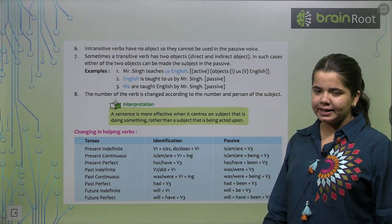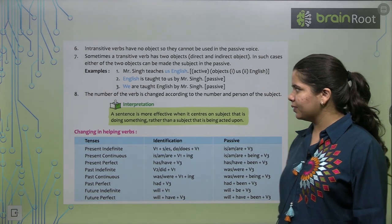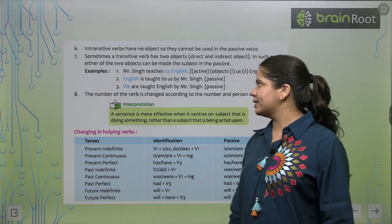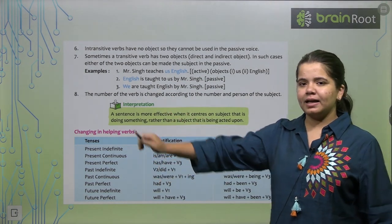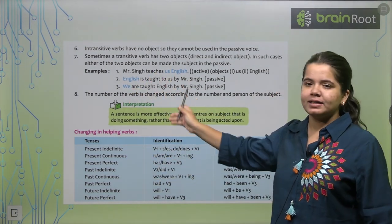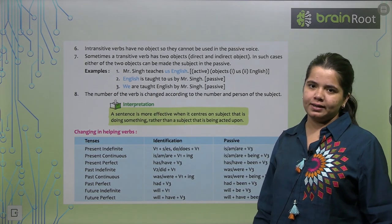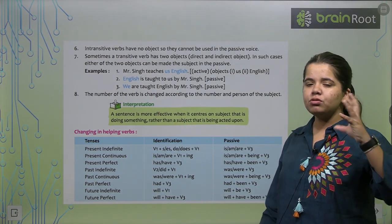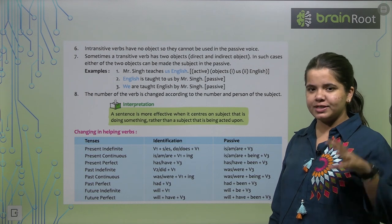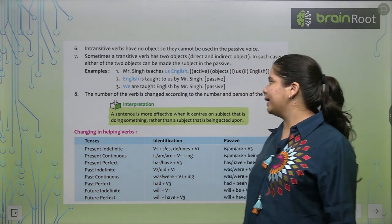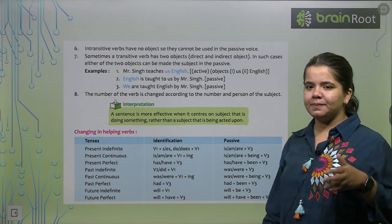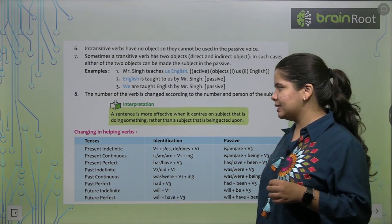Now we'll see examples. Mr. Singh teaches us English. This is an active sentence. This sentence is in active form. English is taught to us by Mr. Singh. This will be passive form because by has been added and we can see that our subject and object positions have also become opposite. They are jumbled. They are not in the same manner as in the active sentence. We are taught English by Mr. Singh. This is also an example of passive.